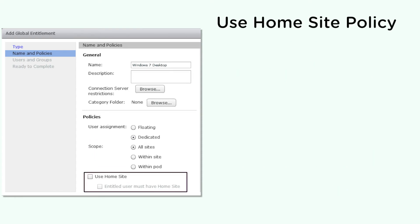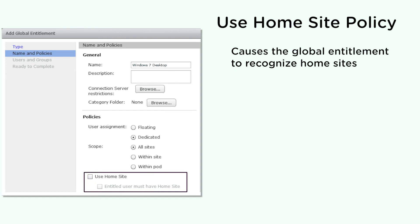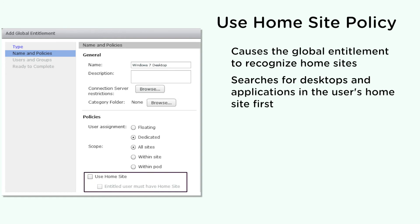The use home site policy causes the global entitlement to recognize the user's home sites. For entitled users that have home sites, the use home site policy causes Horizon 7 to start looking for desktops or applications in the user's home site instead of the site that the user is connected to. If you also enable the optional entitled user must have home site setting, the global entitlement isn't available to users who don't have home sites.